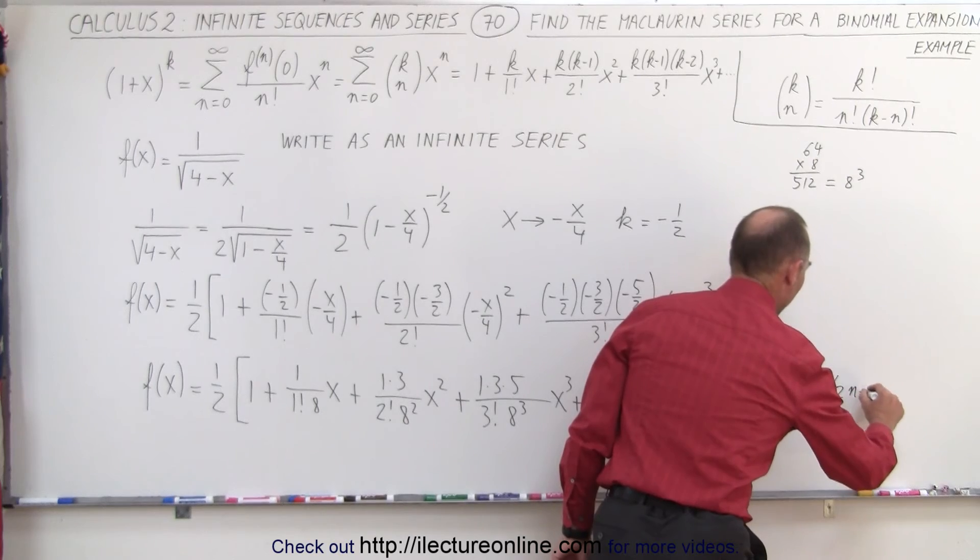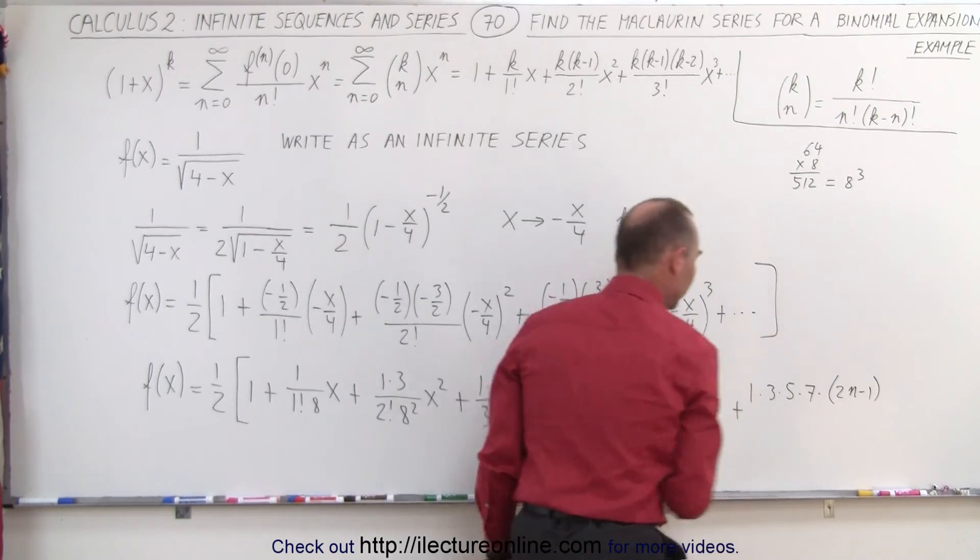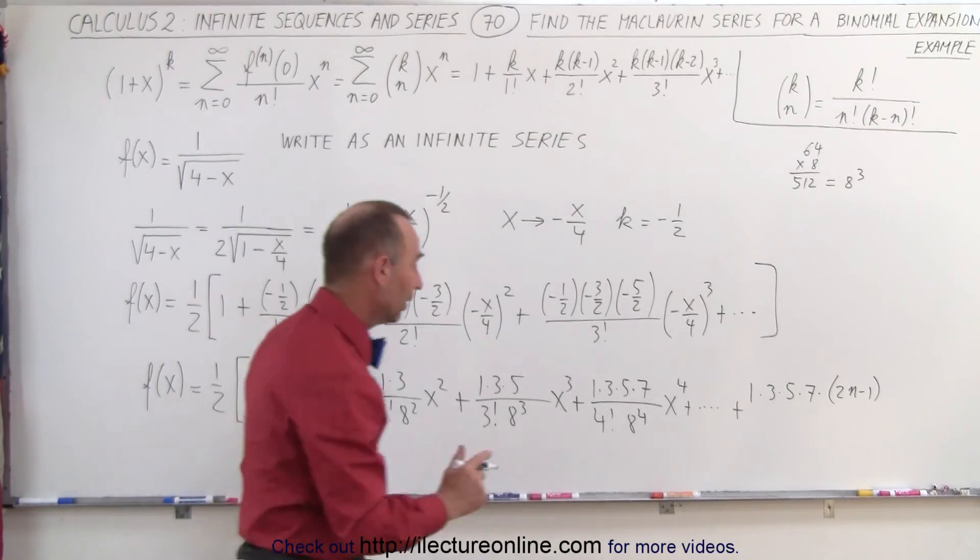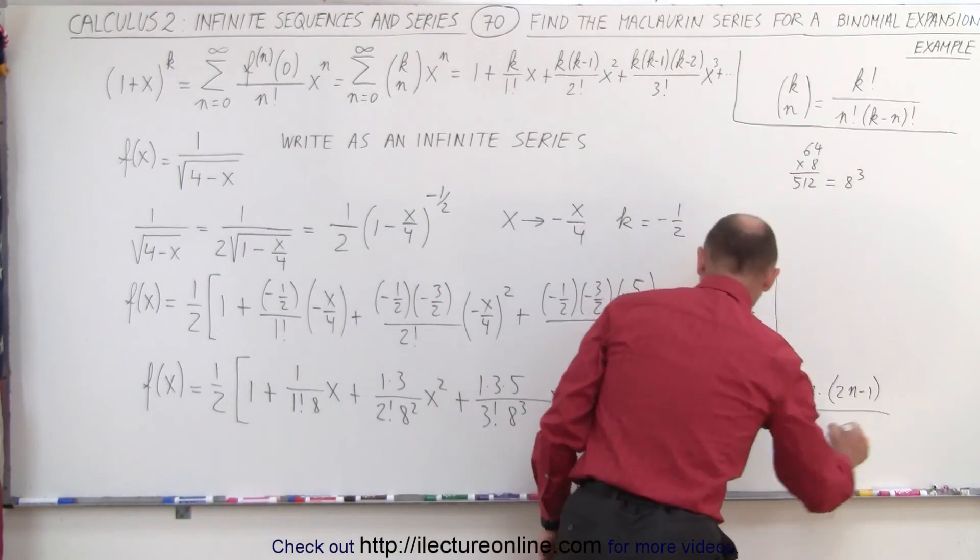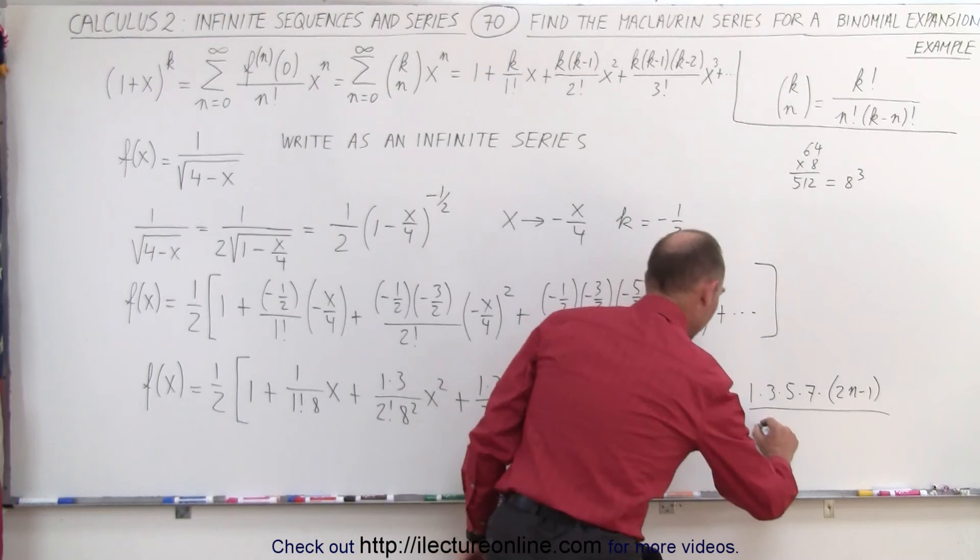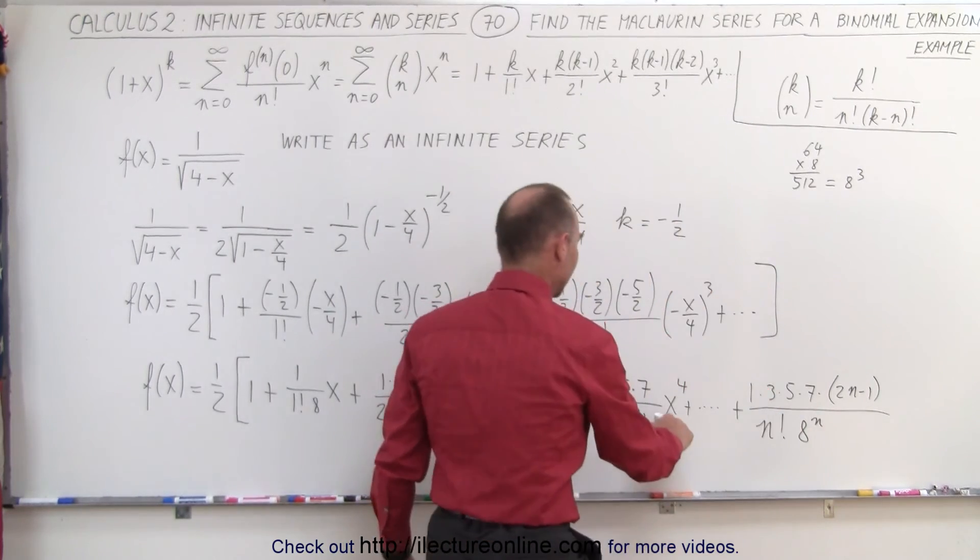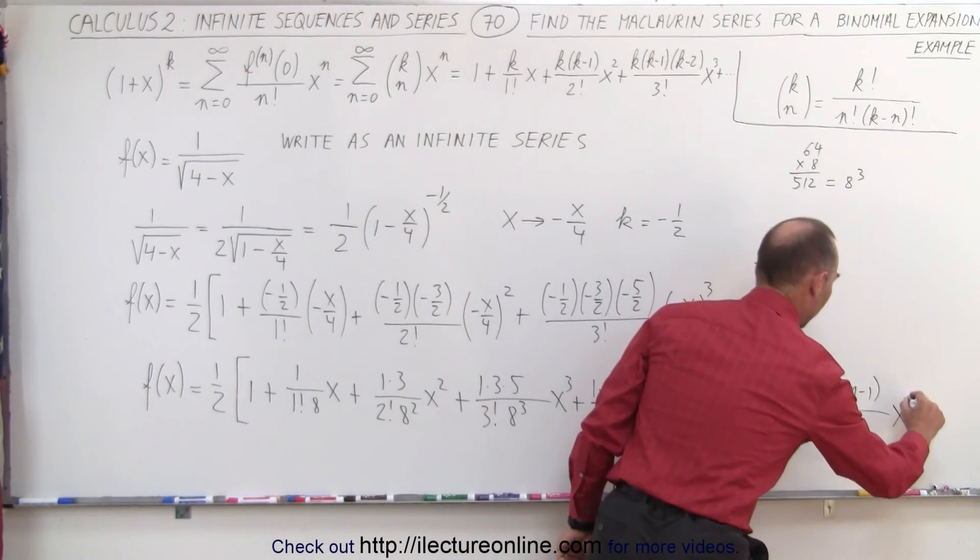Divided by, in the denominator we'll end up with n factorial with 8 to the nth power and x to the nth power.